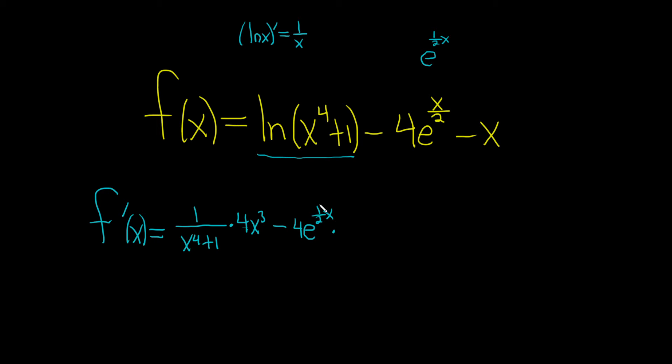And then times the derivative of the inside. Well, the derivative of 1 half x is just 1 half, because the derivative of x is 1. And then minus the derivative of x is 1.